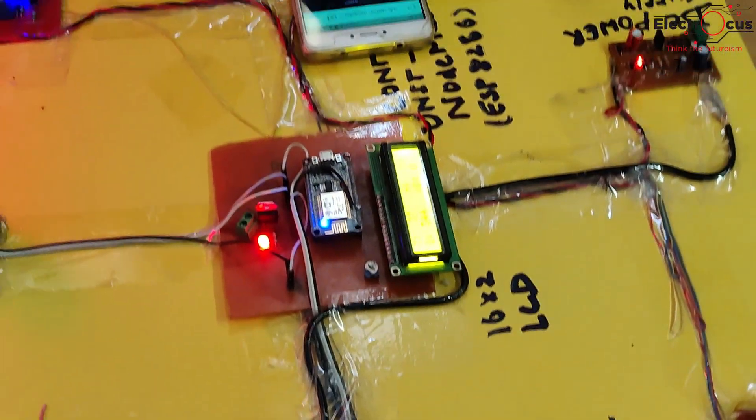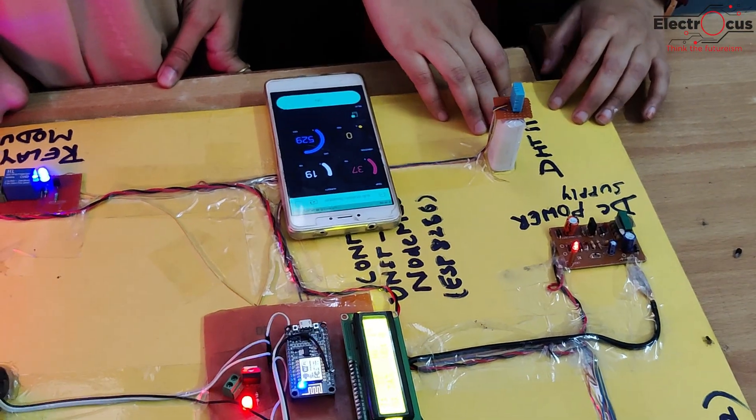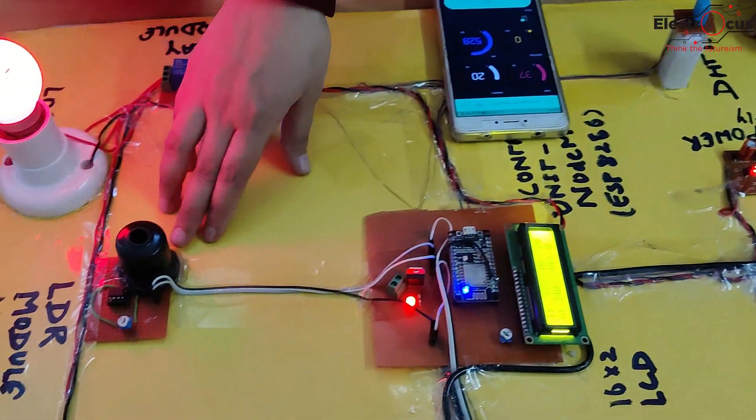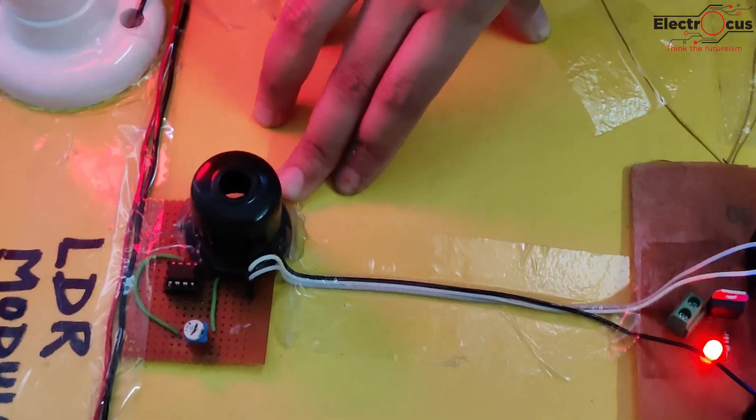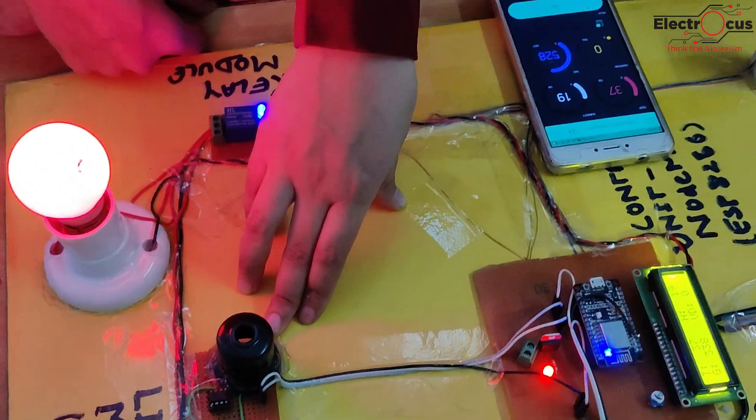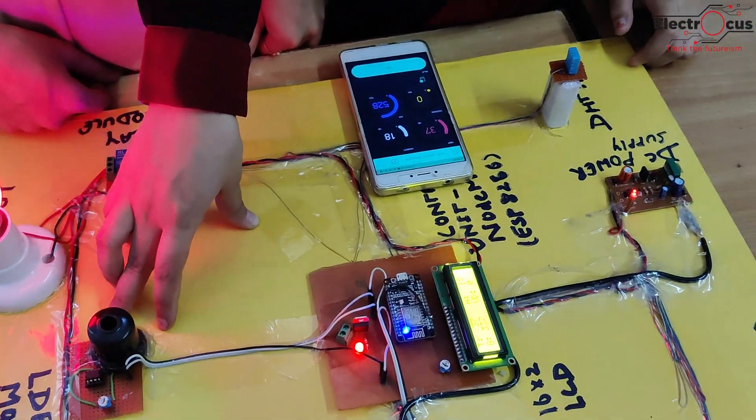This is DHT11, which is basically used for humidity and temperature detection. And this is the LDR, which is used for lightning detection if there is any lightning and thundering occurring in the transmission line.